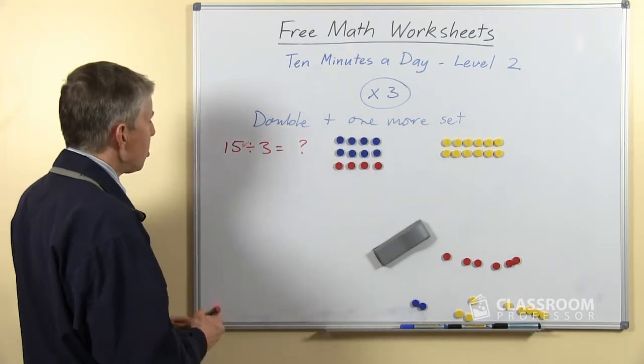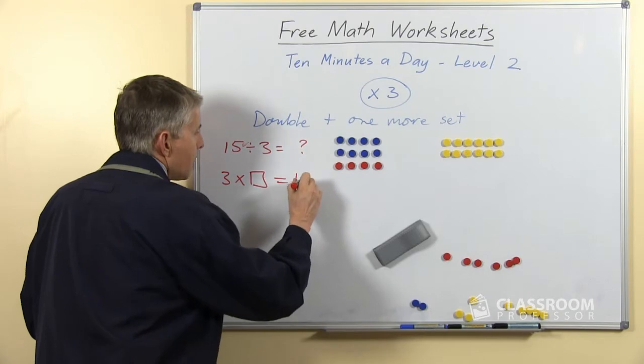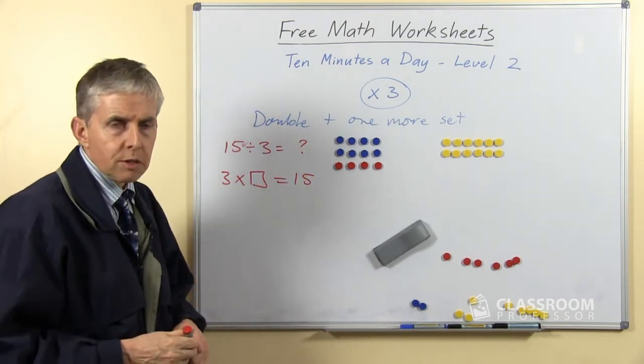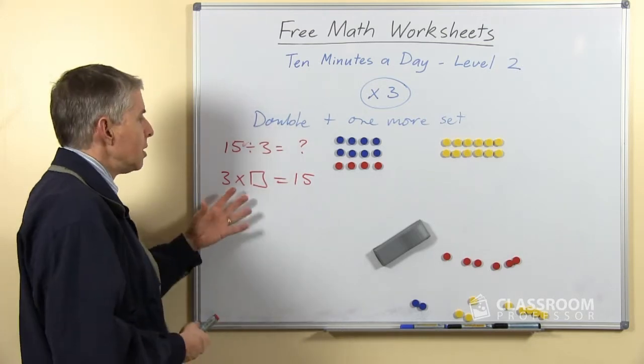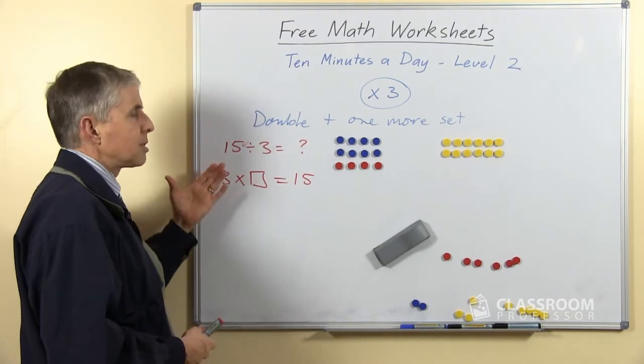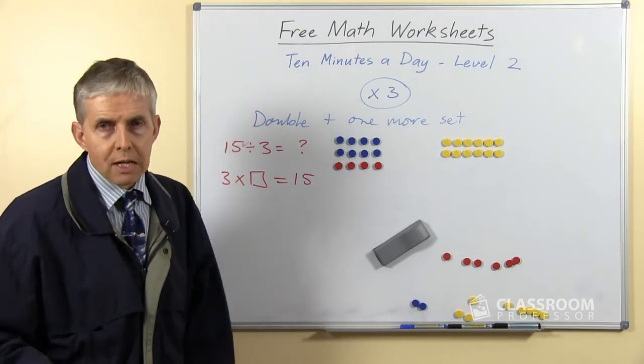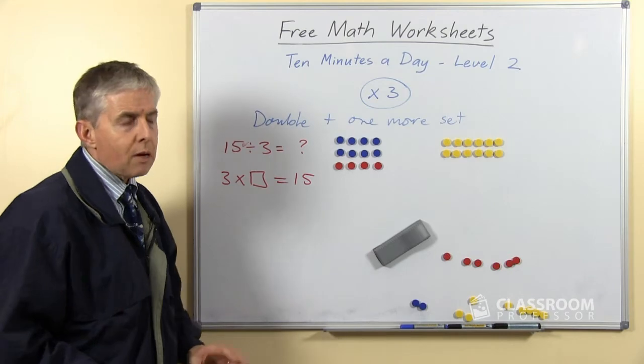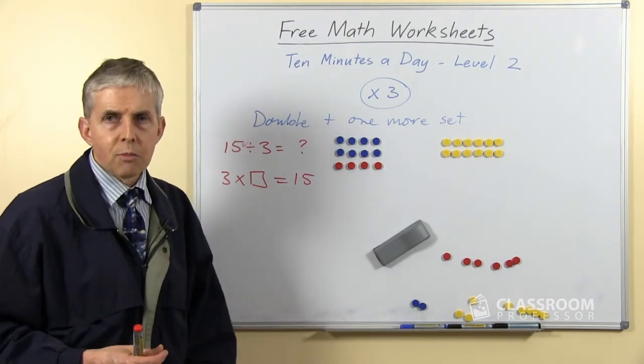Now it would be possible for a student to think through the sequence of multiples for 3 to come up with the right answers. So they could go, alright, 3 times 1 is 3, 2 threes are 6, 3 threes are 9, 3 fours are 12, 3 fives are 15. That's clearly too slow, and we certainly don't want students to do that every time they have to answer a number fact.